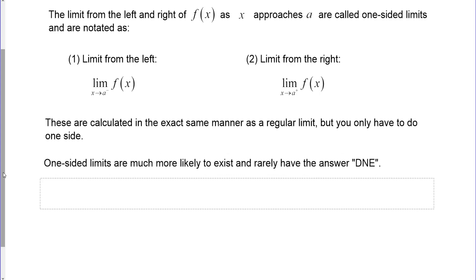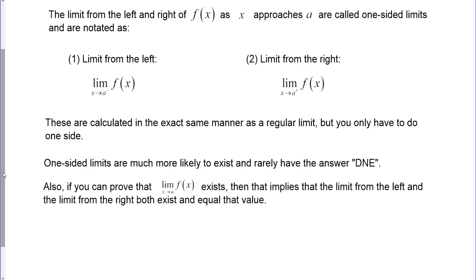One-sided limits are actually much more likely to exist — they rarely have the answer DNE (does not exist). We get DNE when we compare two one-sided limits and they don't agree. However, the individual one-sided limits usually exist, though sometimes they equal positive or negative infinity. Also, if the overall limit exists, that implies both one-sided limits exist and are equal, so we don't need to change our analytic approach.